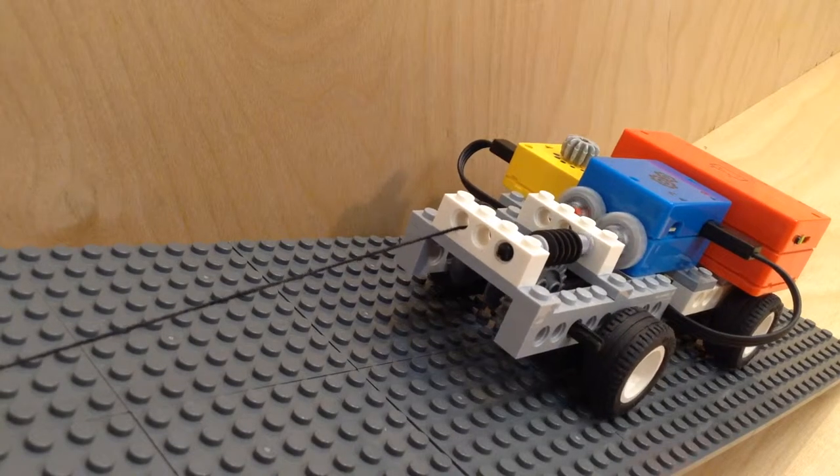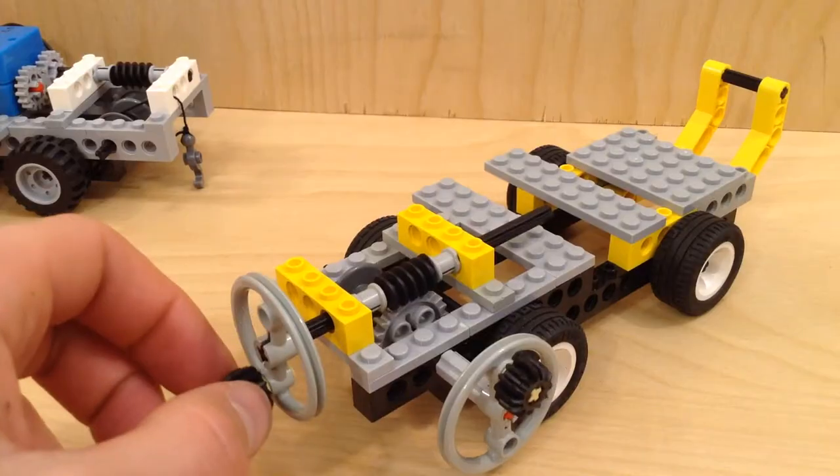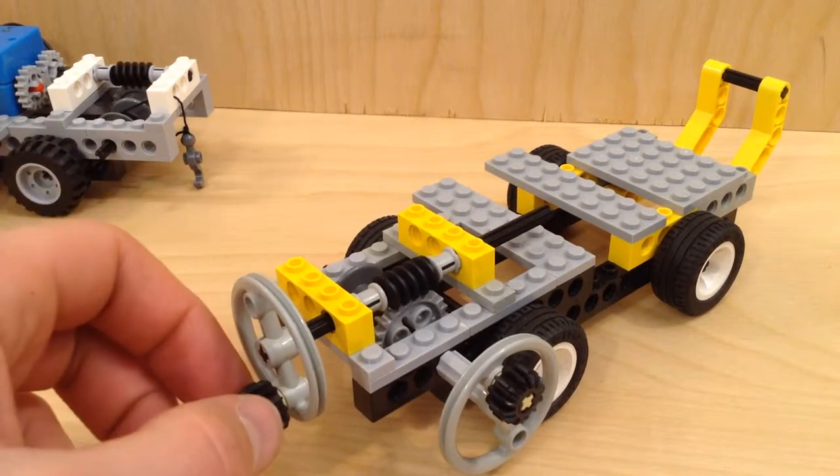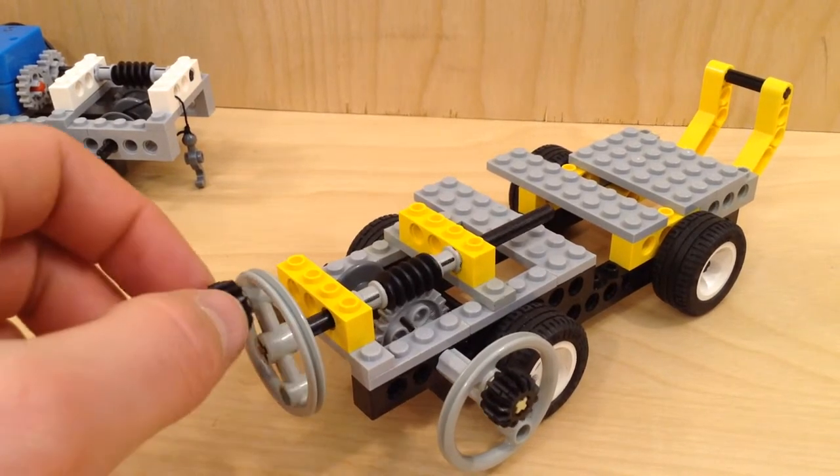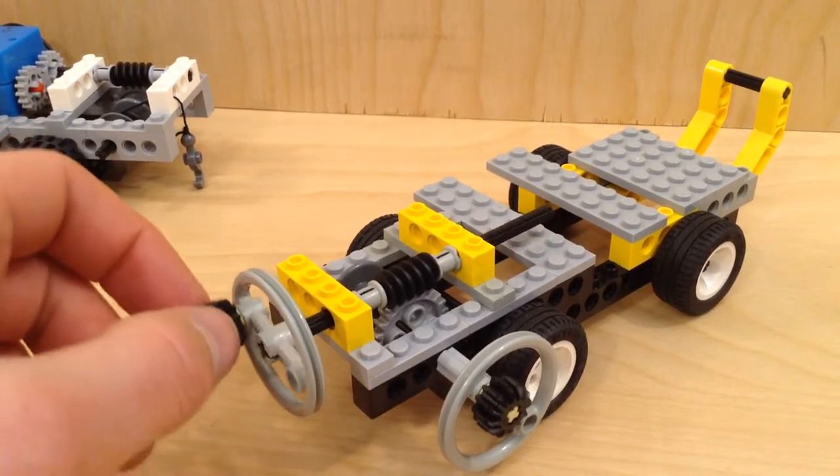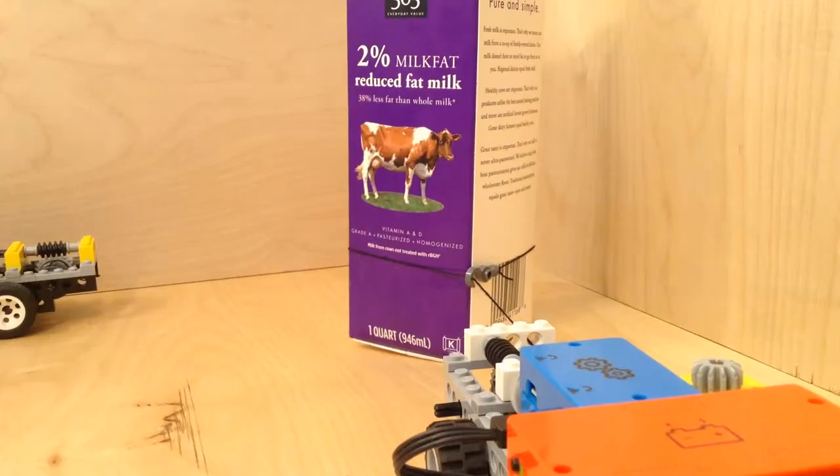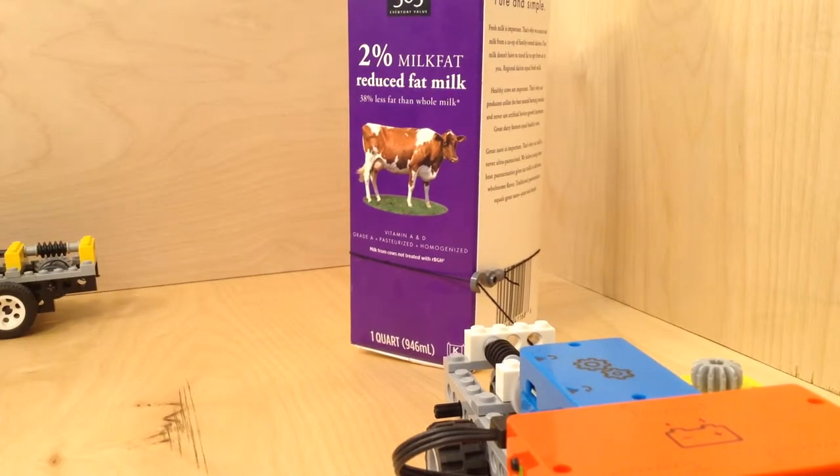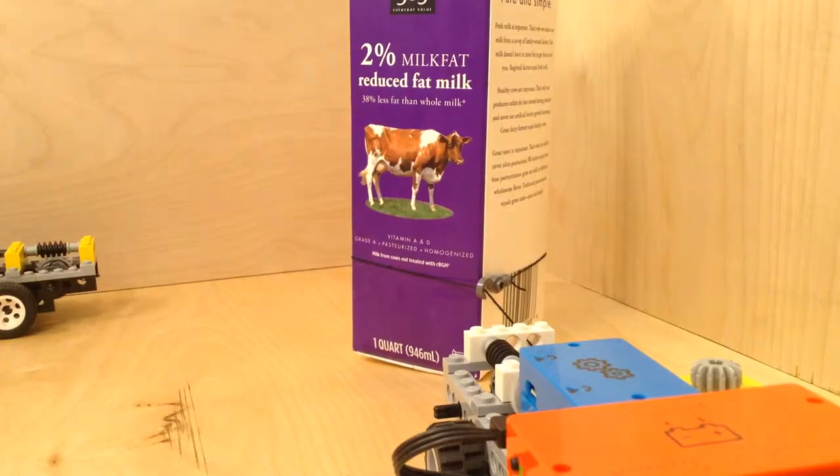Worm drives have two very useful features. First, for every full turn of the worm gear, it advances the round gear by only one tooth. This enables you to trade speed for torque, or pulling strength, in a very big way.